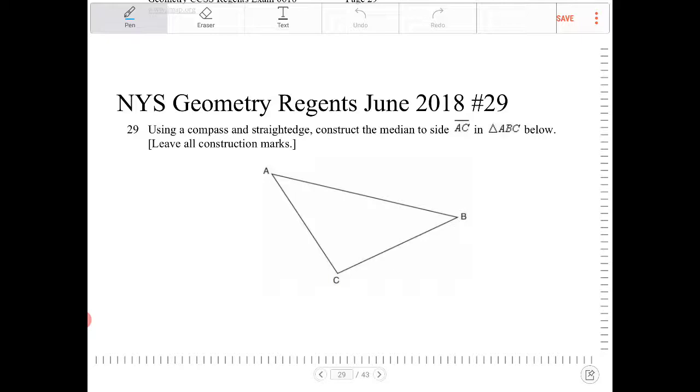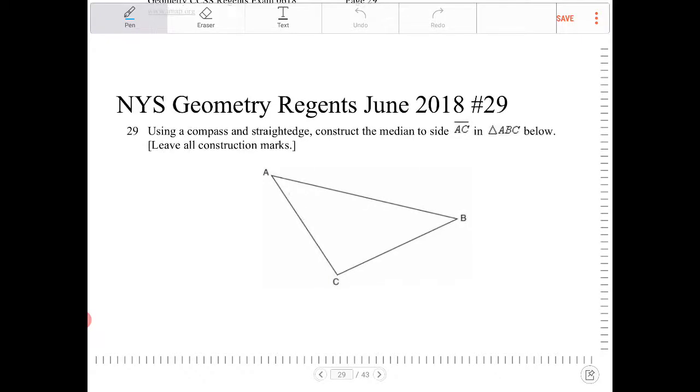What we want to do is find a median to side AC. In order to do that, we have to understand what a median is first of all. A median is a line drawn from a vertex to the opposite side, such that that line will bisect, will intersect the midpoint of that opposite side. So we need to identify where the midpoint is of side AC here.